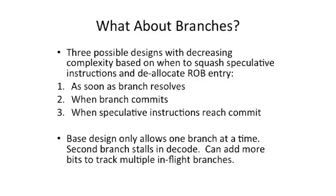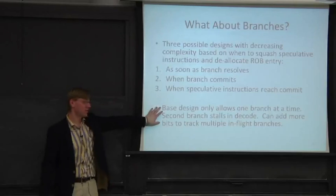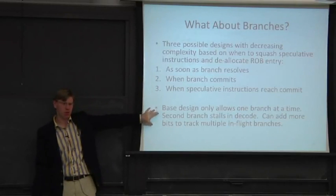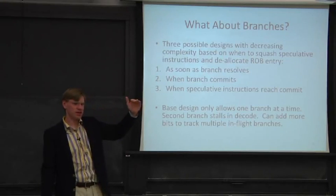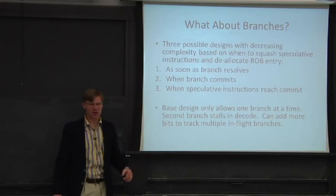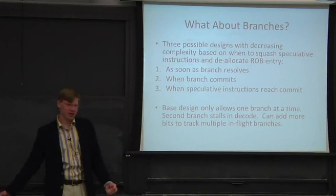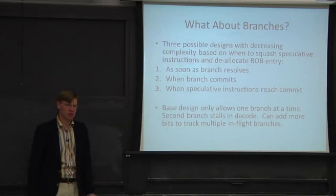Having multiple branches in the pipe simultaneously makes the simple approach of moving the tail pointer insufficient, because you might mispredict one branch but not another, complicating the squash logic.